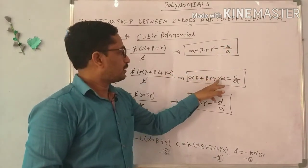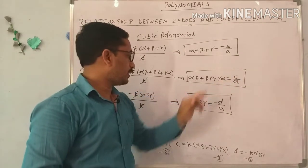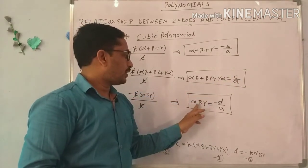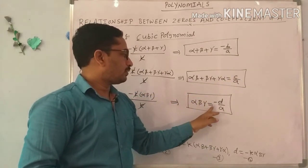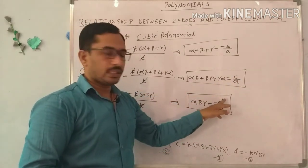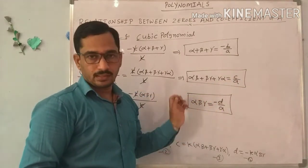So alpha beta plus gamma alpha equals C by A, and alpha into beta into gamma equals minus D by A.